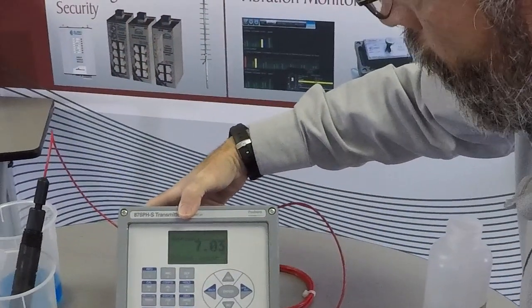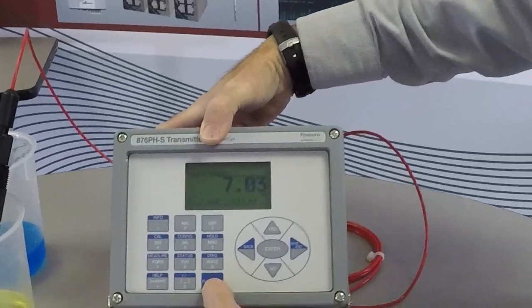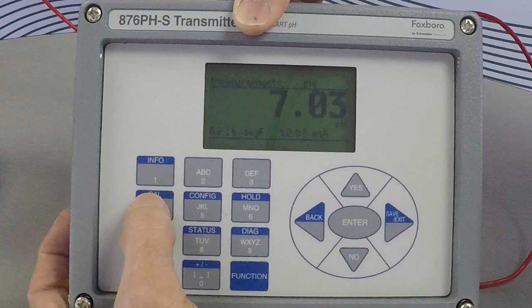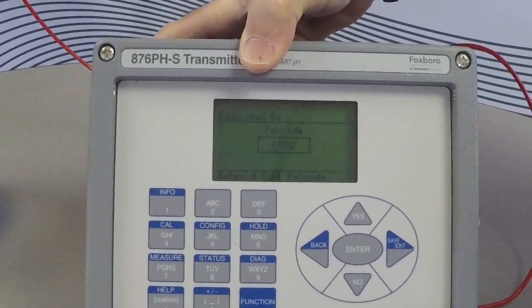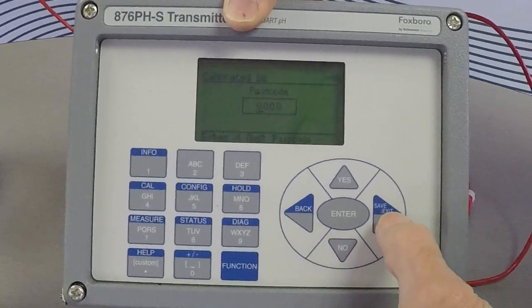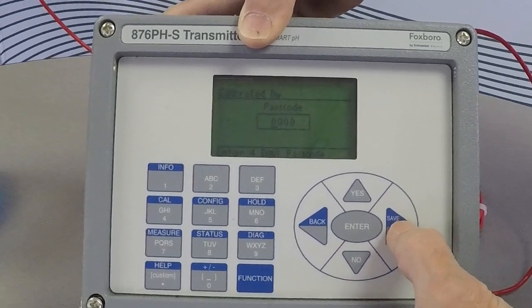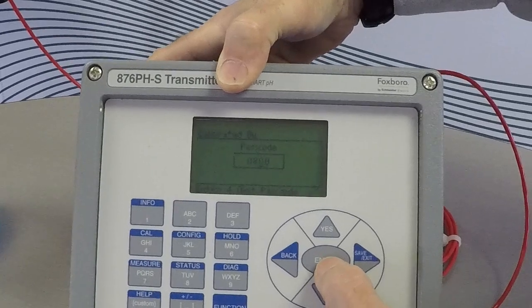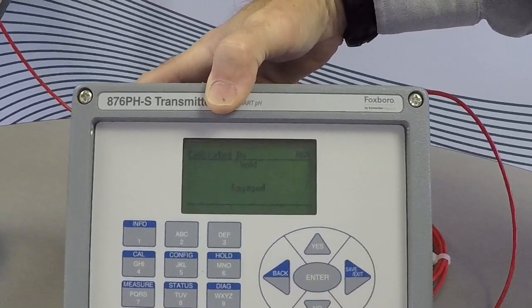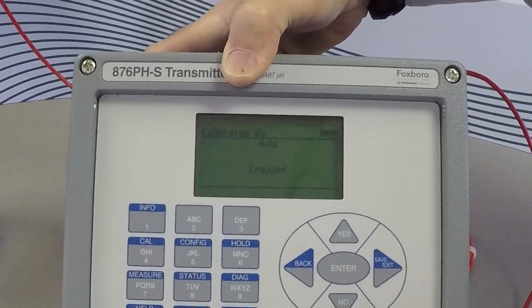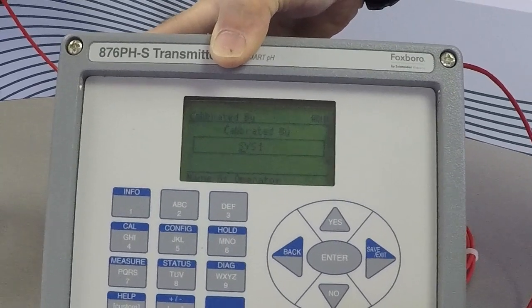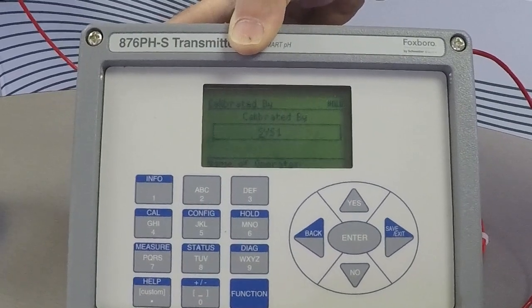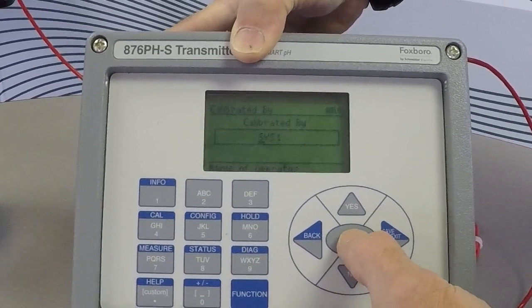To get into a calibration routine, we're going to push the function key and it shows function up on the top and then we're going to go to the cal mode. Now you're asked to put in a password which customers can change but the factory default is 800 and we're going to push enter and we are going to hold the output during this process. You have an opportunity to enter in some ID of whoever is doing the calibration and we're just going to accept the default for now.